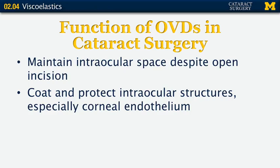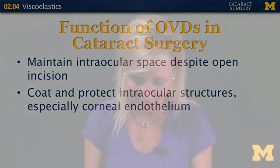We also use OVDs to protect the endothelium. Why is that important? Because we're born with about 3,500 endothelial cells per square millimeter, and we have around 2,400 of those by the time we're an adult. We continue to lose them throughout the rest of our life, and they don't repopulate. So the more protection, the better.